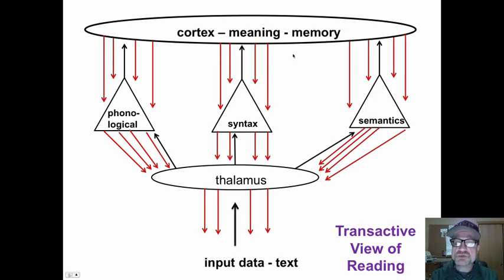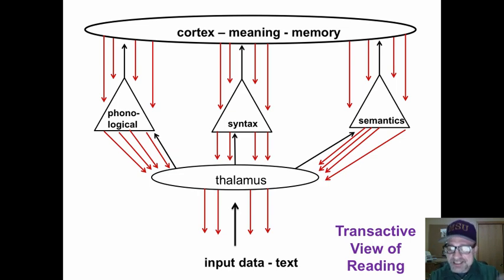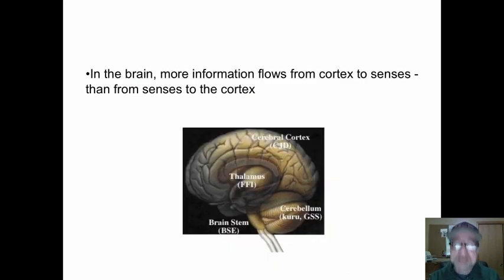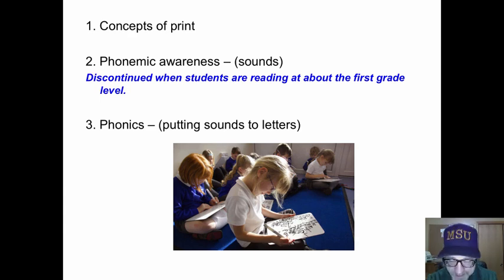Today, we know that almost ten times more information flows from the cortex down to the thalamus than from the thalamus up. Therefore, reading is a transaction between what is in the head and what is on the page. In the brain, more information flows from the cortex to the senses than from the senses up to the cortex. Hence, ten essential elements of any literacy program.